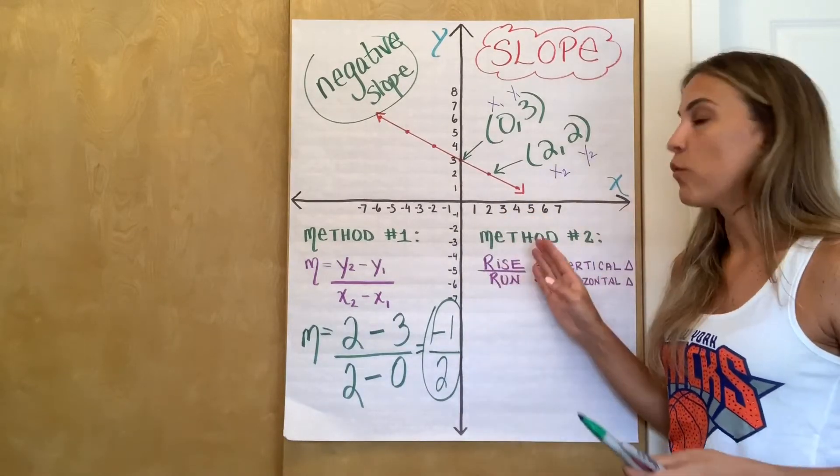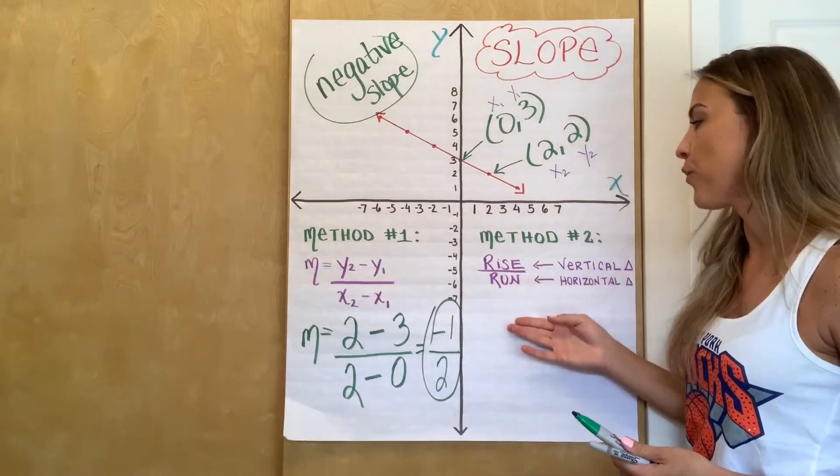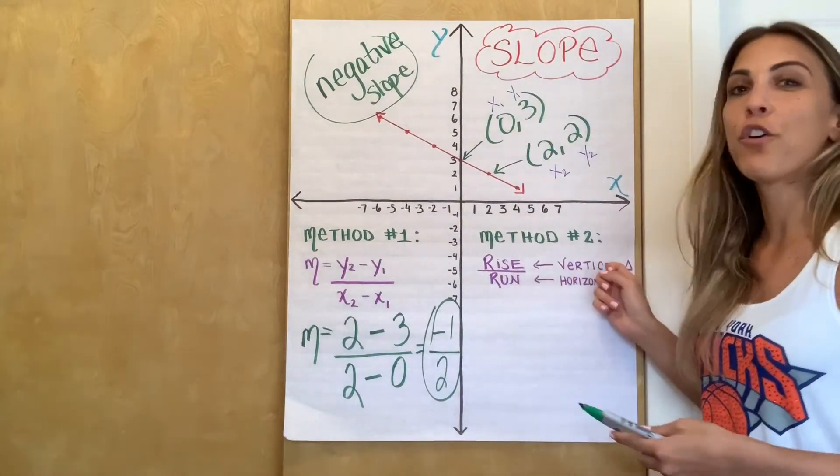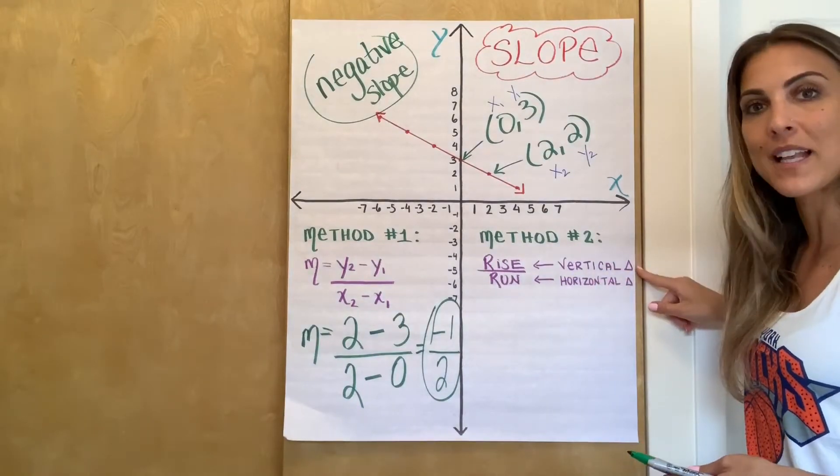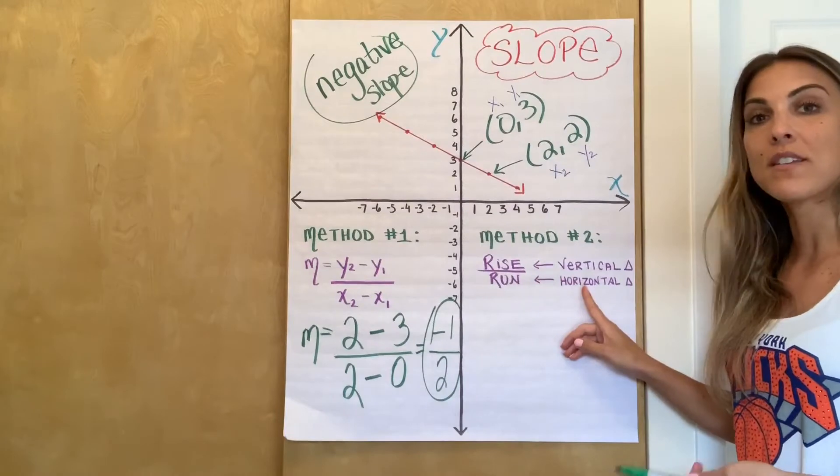Method number two is using rise over run. So if you have a graph, a lot of times it's easier to just do this thing called rise over run. Rise meaning my vertical change. Okay? That triangle represents delta, which means change over my run, which is my horizontal change.